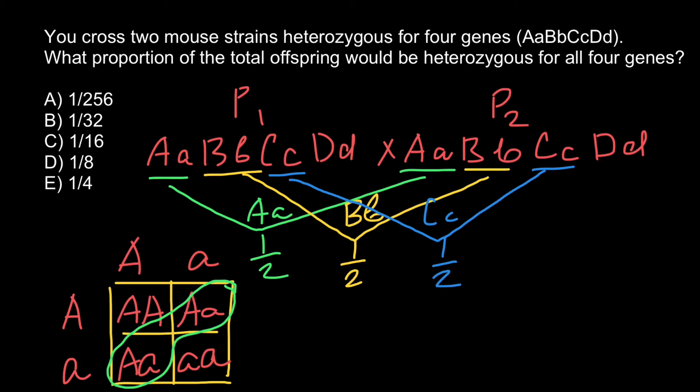For the last gene D, both parents are again heterozygous, and we expect one half of the progeny to be heterozygous for gene D.